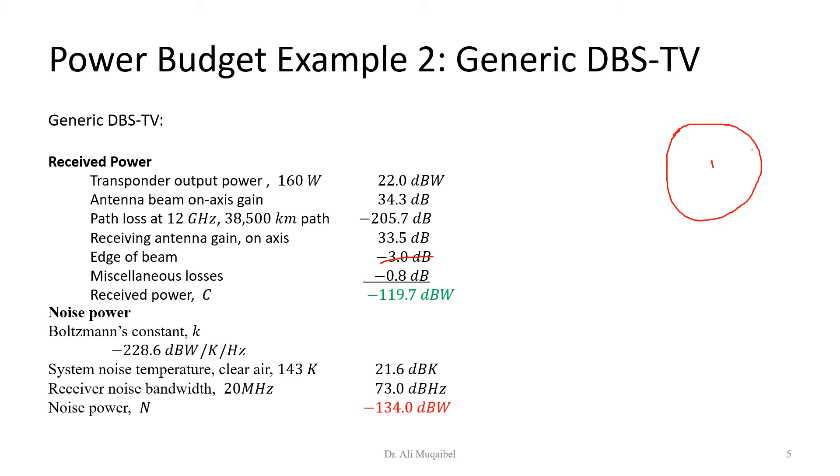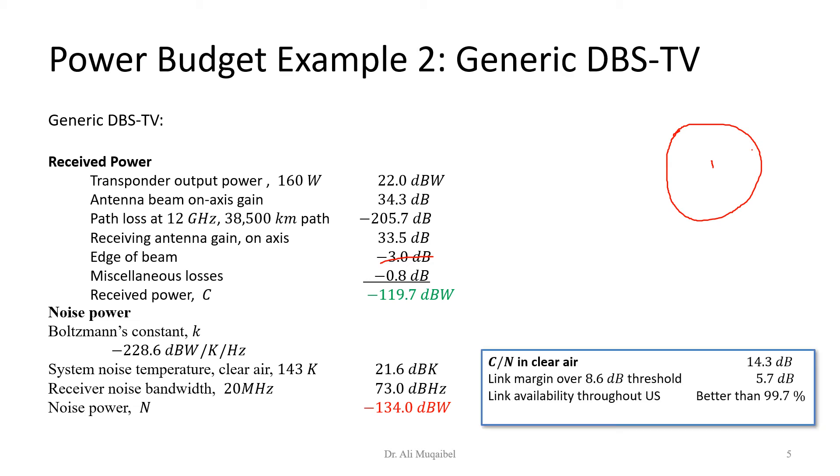That's relatively good because the noise is much less than the signal level. If you want the carrier to noise ratio, it will be the difference between these two, which is approximately 14.3 dB. If the margin for the system to operate is 8.6 dB, we have extra margin of 5.7 dB. If you add 5.7 plus 8.6 you get 14.3. For this example, the link availability is relatively high, which means it's about 99.7%. You cannot get this number directly from here, but this is just given to complete the picture.